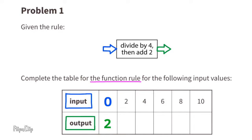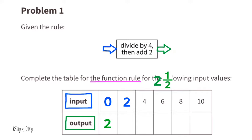Now the input is two. Let's put a two inside. Two divided by four equals two-fourths, or one-half, then add two. One-half plus two is two and a half. A two goes in and a two and a half comes out.